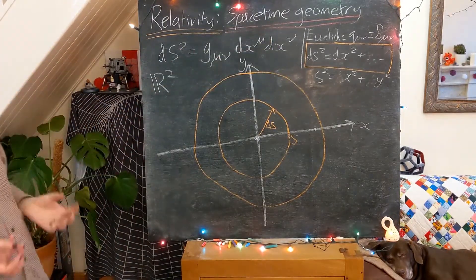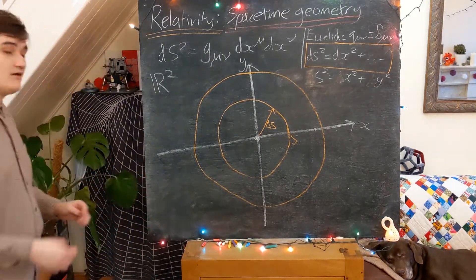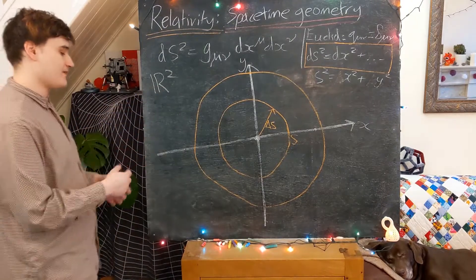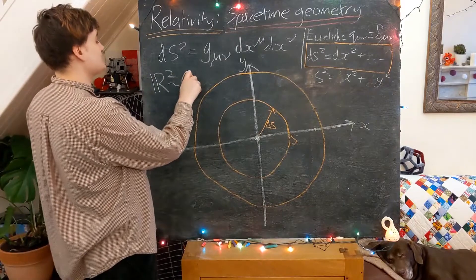I just want to make an important, or I just want to stress an important point now that essentially what we've done is we've taken R2 which we remember we can view as just, well it's simply just a set of two tuples, x and y.